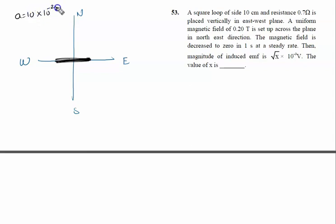The side is 10 × 10⁻² meters and resistance is 0.7 ohm. A uniform magnetic field of 0.2 tesla is set up across the plane in the northeast direction.